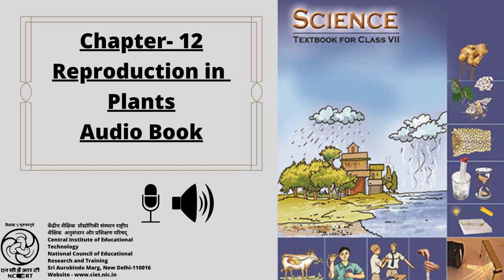In class 6, you learnt about different parts of a flowering plant. Most plants have roots, stems and leaves. These are called the vegetative parts of a plant. After a certain period of growth, most plants bear flowers. You may have seen the mango trees flowering in spring. It is these flowers that give rise to the juicy mango fruit we enjoy in summer. We eat the fruits and usually discard the seeds.